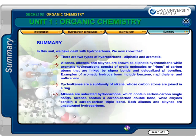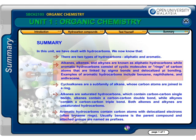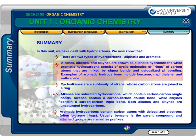In this unit, we have dealt with hydrocarbons. We now know that: 1. There are two types of hydrocarbons — aliphatic and aromatic. 2. Alkanes, alkenes, and alkynes are known as aliphatic hydrocarbons, while aromatic hydrocarbons consist of cyclic molecules, or rings of carbon atoms, that are linked by sigma bonds and delocalized pi bonding. Examples of aromatic hydrocarbons include benzene, naphthalene, and anthracene.